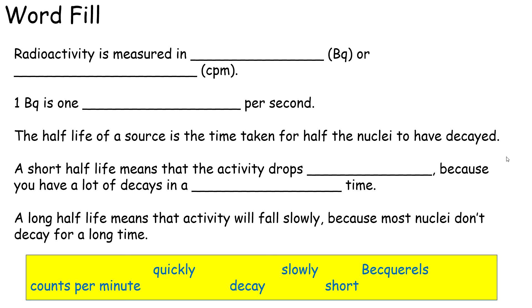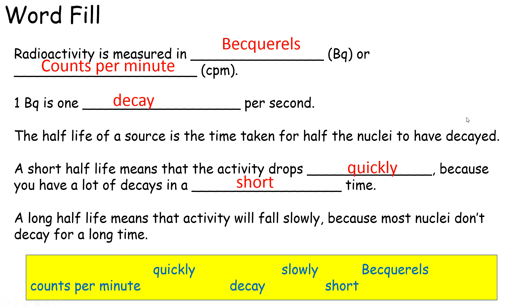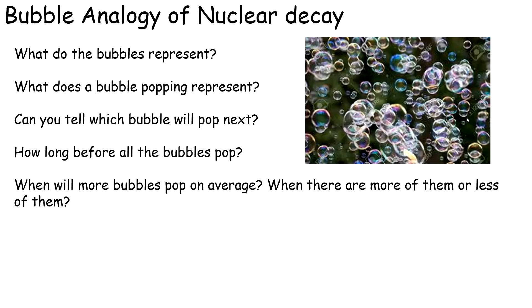We'll go through it. Radioactivity is measured in becquerels or counts per minute. One becquerel is one decay per second. The half-life of the source is the time taken for half the nuclei to have decayed. A short half-life means that the activity drops quickly because you have a lot of decays in a short time. A long half-life means that the activity will fall slowly because most nuclei don't decay for a long time.